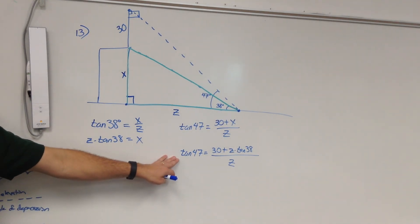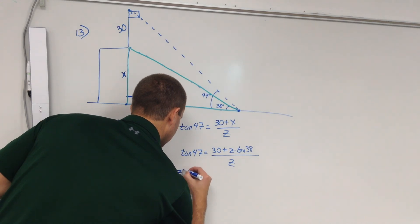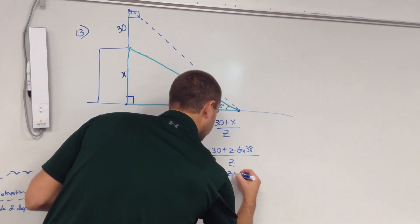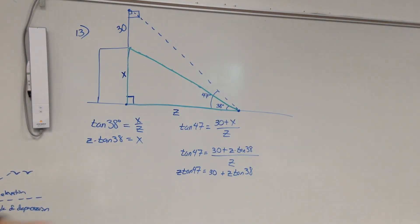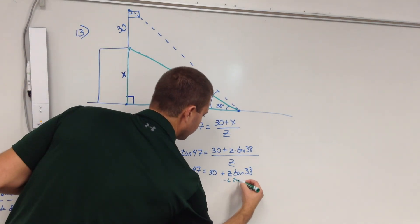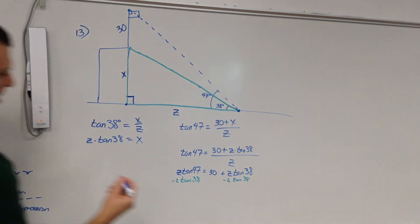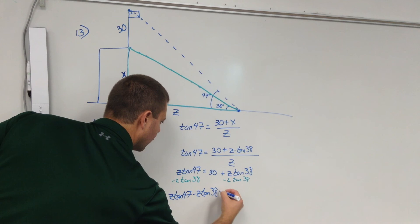This isn't bad now. We don't like fractions, so let's multiply both sides by Z. So that'll give me Z tangent 47 equals, the Z's gone on the bottom then, right? 30 plus Z tangent 38. Let's multiply both sides by Z. That'll give me, get rid of the Z on that side. Now I'm trying to solve for Z, so I want to get all the Z's to the same side of the equal sign. So I'm going to subtract Z tangent 38 from both sides. And that gives me simply Z tangent 47 minus Z tangent 38 equals 30.